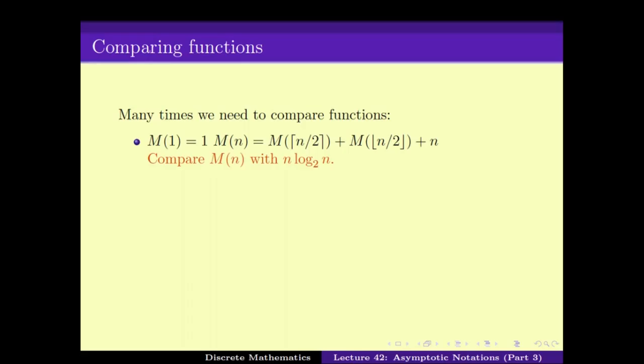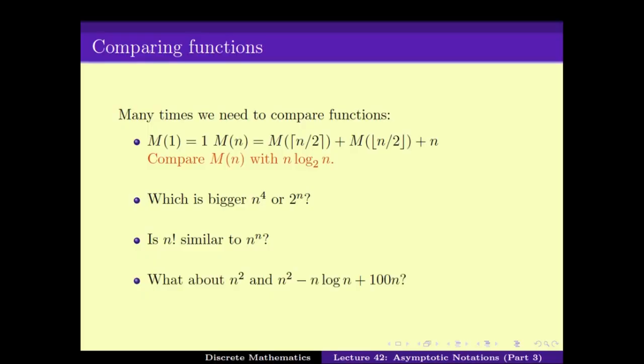How can we compare whether we have done a good job? For that we need to work with what we call asymptotic notations. Here are some of the questions that are asked: How can we compare M(N) with N log N? Which is bigger, N^4 or 2^N? Is N factorial similar to N^N? And what about N² versus N² − N log N + 100N?